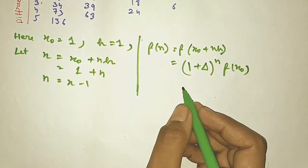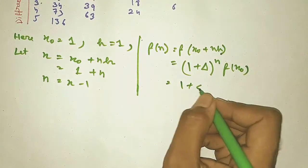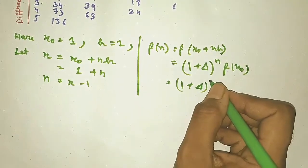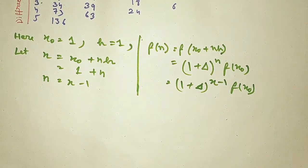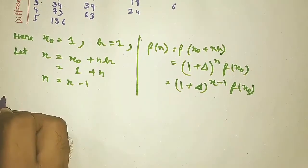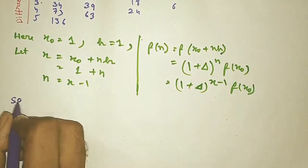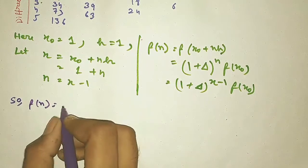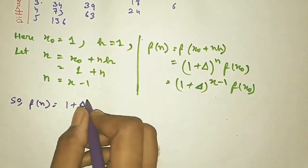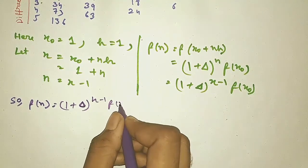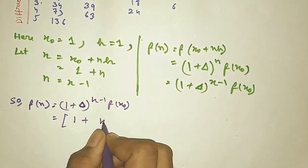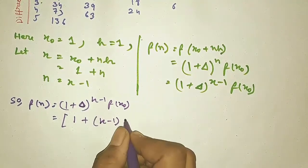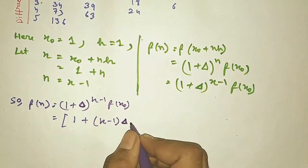Substituting n = X − 1, we get f(X) = (1 + Δ)^(X−1) · f(X₀). Now we are going to apply the binomial theorem to expand (1 + Δ)^(X−1). Using the binomial theorem, we get 1 + (X−1)·Δ + ...